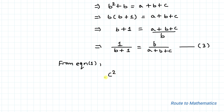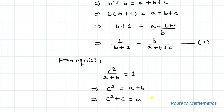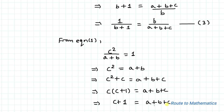Again considering equation 1, we have c² divided by (a+b) equals 1. Similarly, by cross multiplication, we have c² equals a+b. Adding c to both sides of the equation, we have c² plus c equals a plus b plus c. Taking c as common, we have c multiplied by (c+1) equals a plus b plus c.